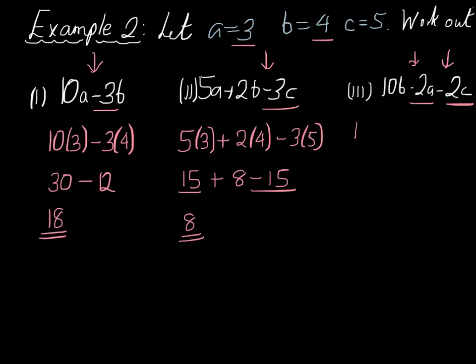Let's do the last example. We've got 10b, so 10 lots of 4, take away 2 lots of a, which is 2 lots of 3, take away 2 lots of c, which is 2 times 5. Let's work this out. 10 times 4 is 40, take away 2 times 3 is 6, take away 2 times 5 is equal to 10. 40 take away 6 is 34, take away another 10 is equal to 24.